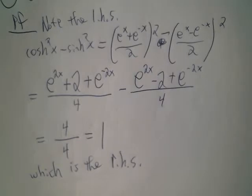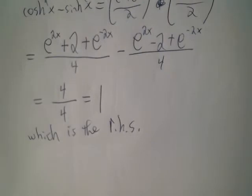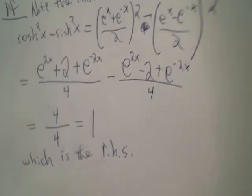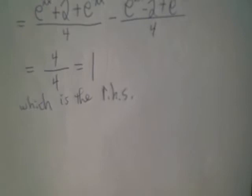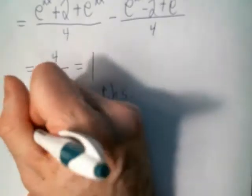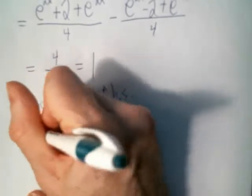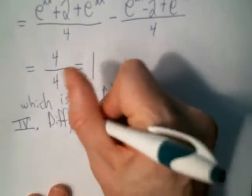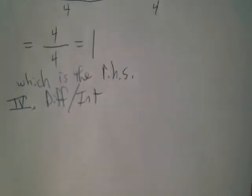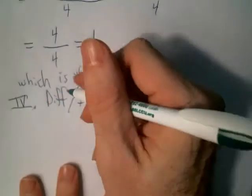You probably saw these proofs for identities in trig class — you can do them again for the hyperbolics. Those identities will become useful once you get into more complicated hyperbolic integrals. The rules for derivatives and integration are pretty much the same as the trig rules, except you have some sign differences to worry about.